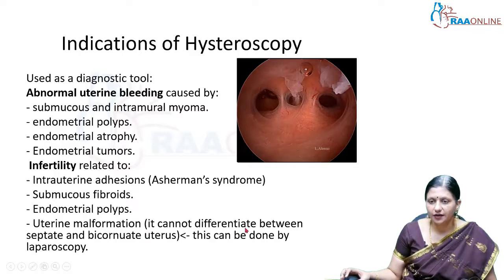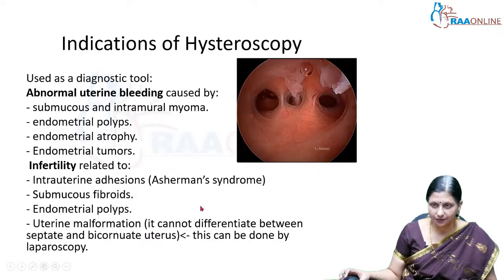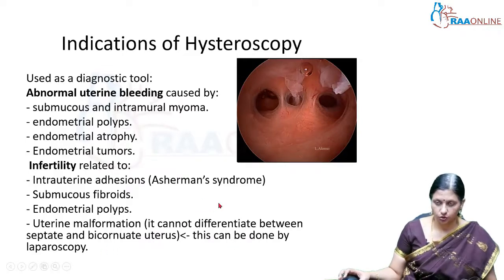Hysteroscopy cannot differentiate between septate and bicornuate uterus, but a combined hysterolaparoscopy can be used to do this job.